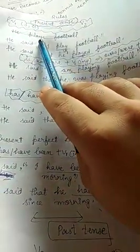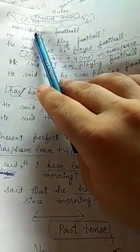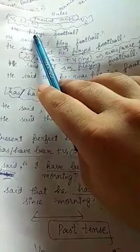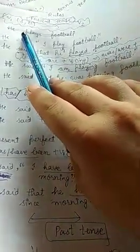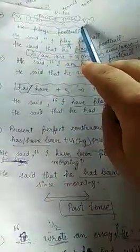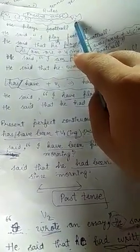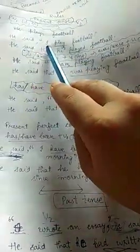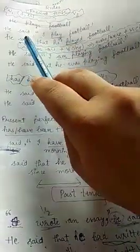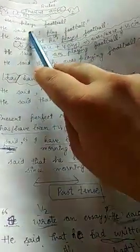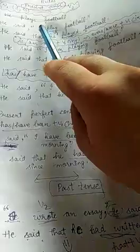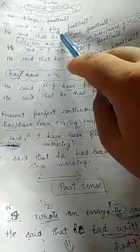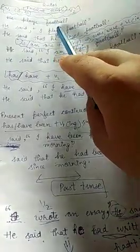In present tense, we are all obvious with the rule. Verb first form with S and ES is going to be changed into the second form of the verb in indirect. For example: He said, 'I play football.' The first person 'I' changes to 'he'.